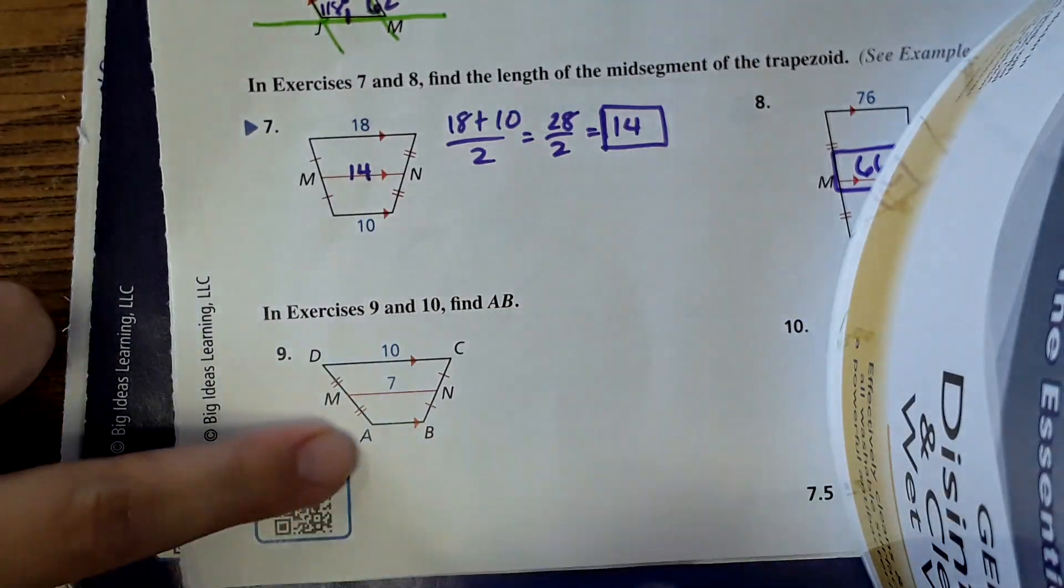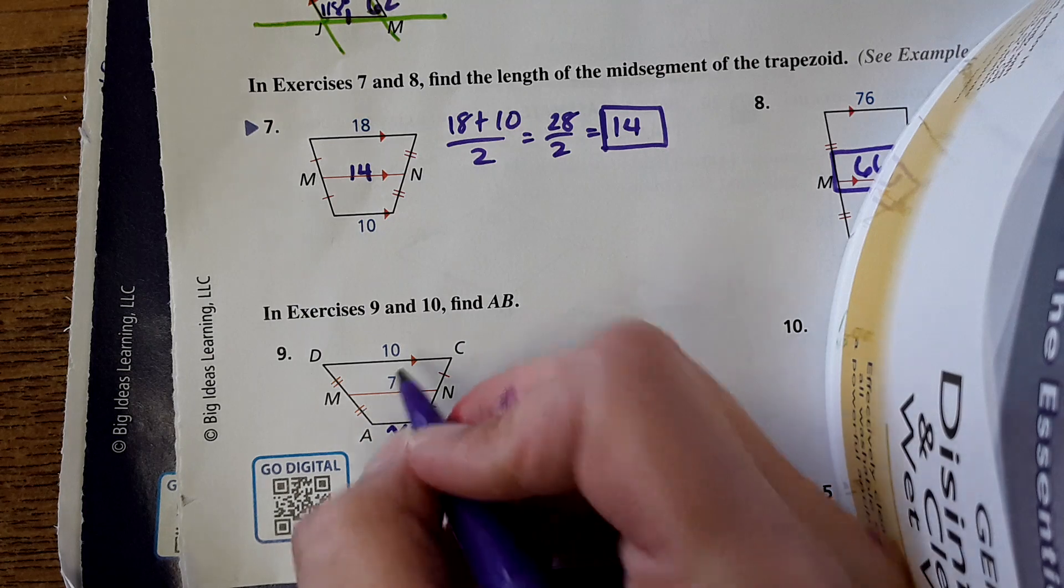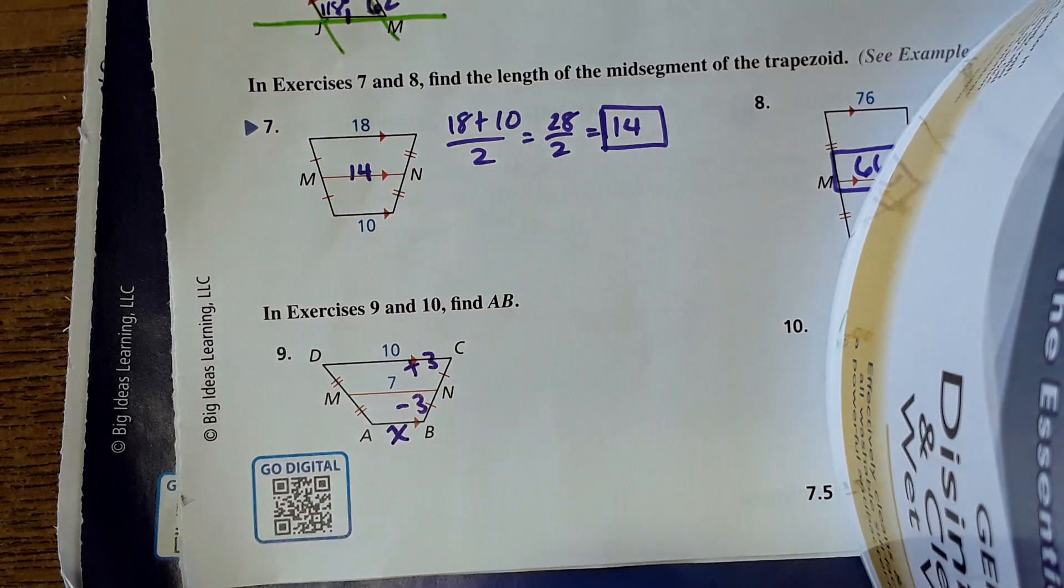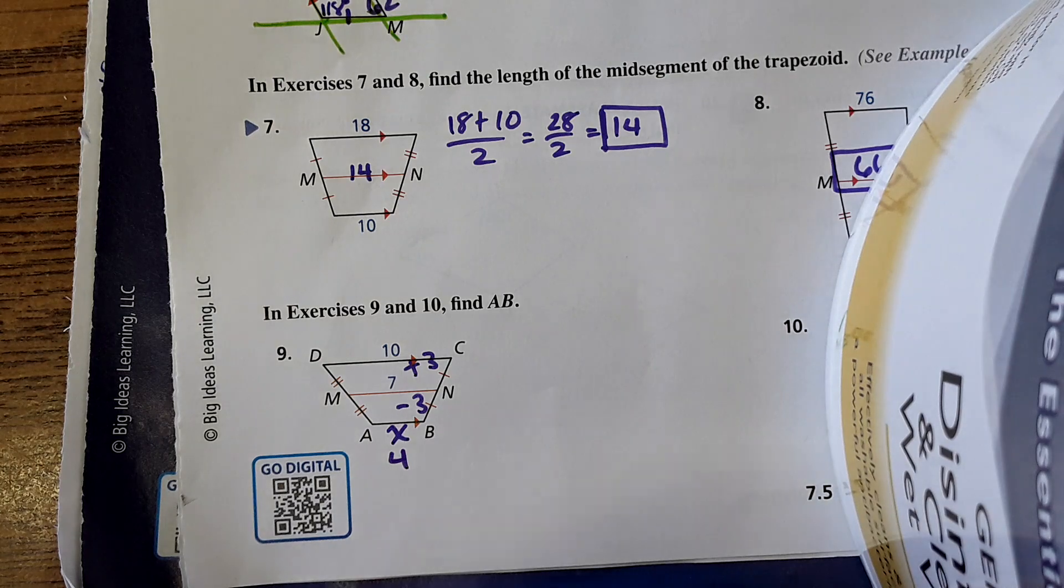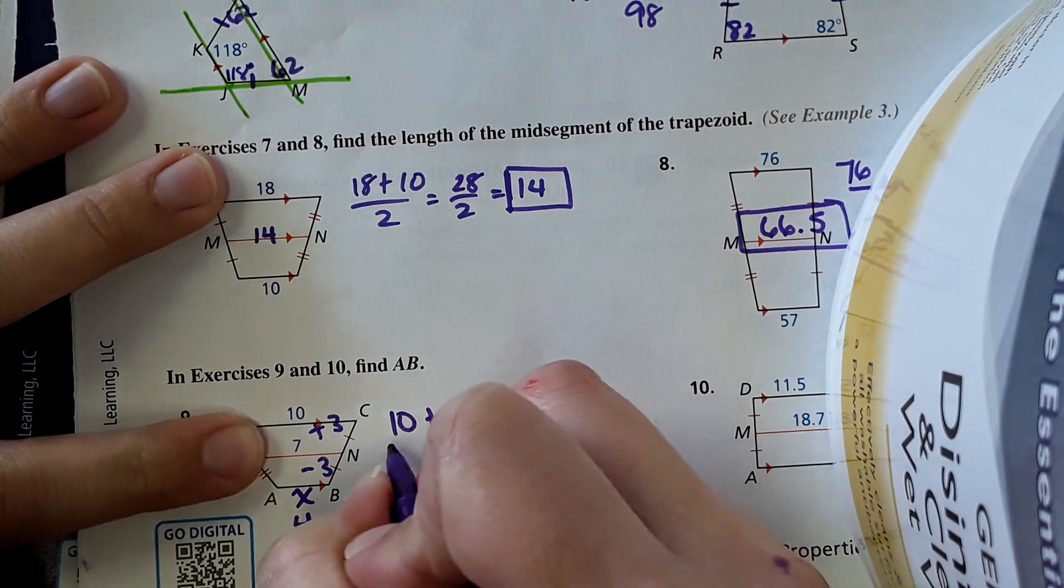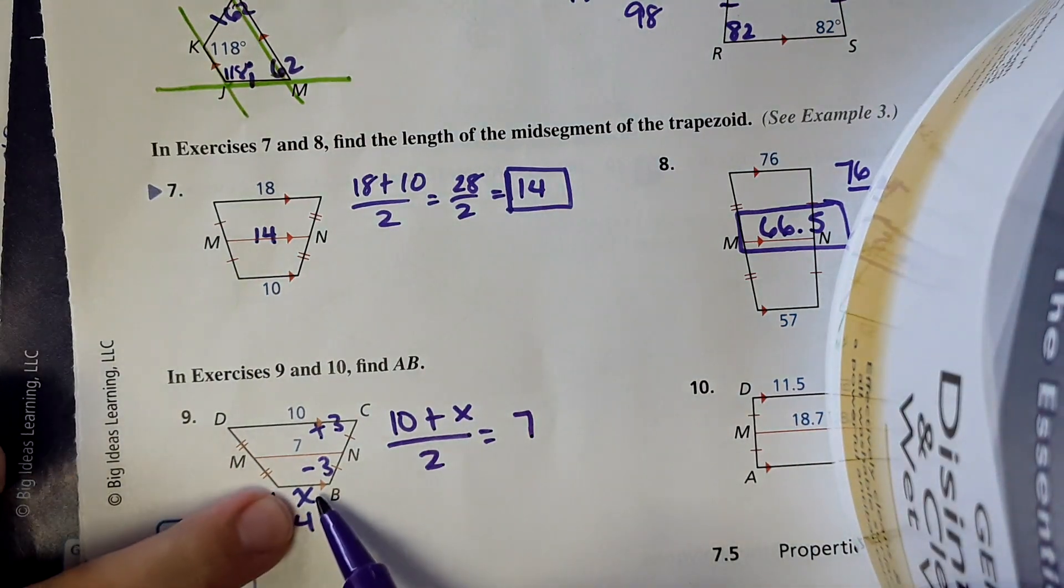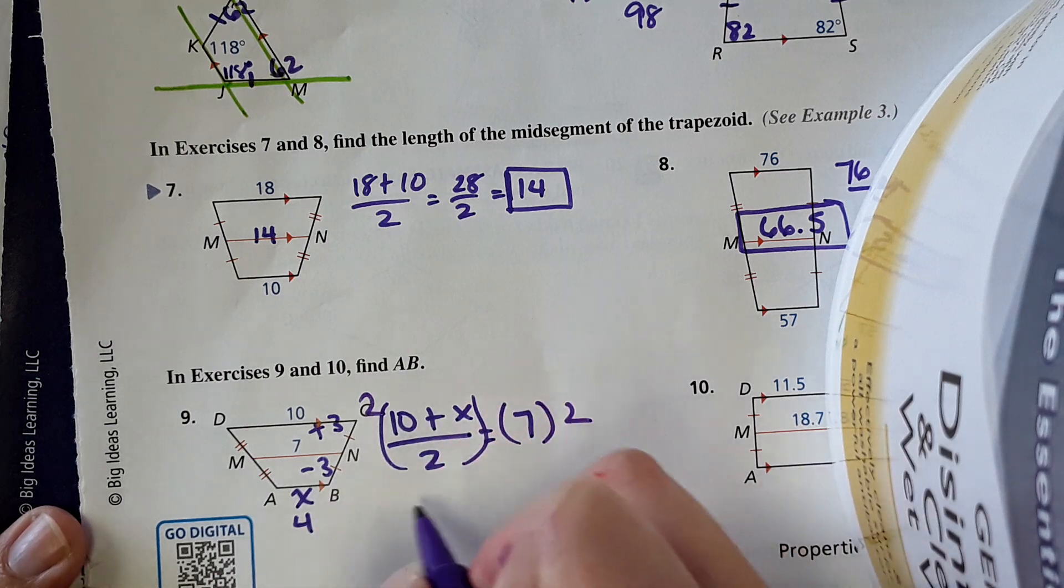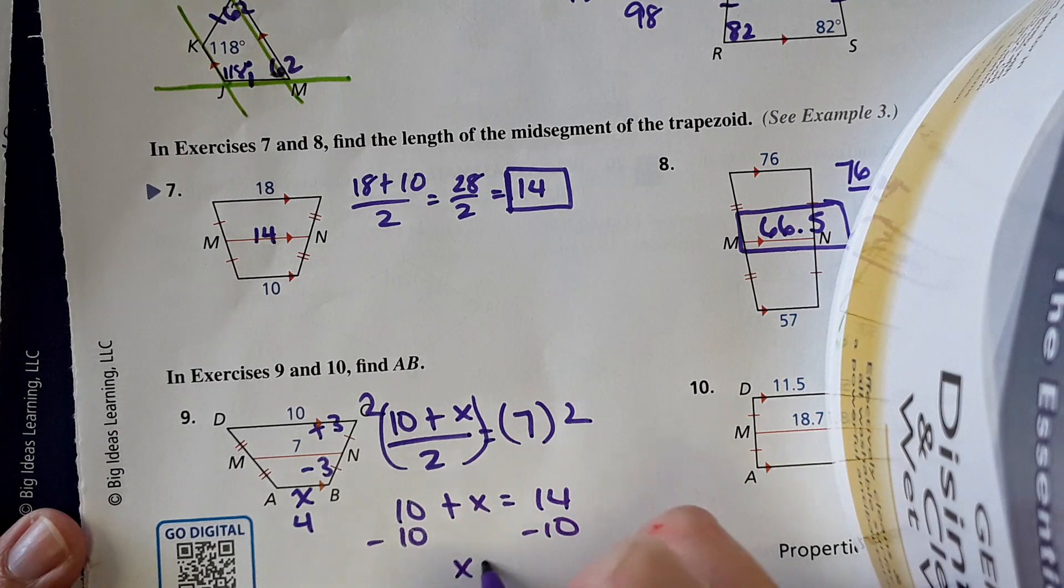Okay, find AB. So now it wants this right here. You could use the equation, or you could recognize that this is 7 plus 3 here, so this number is going to be 7 minus 3 in the other direction, so it's going to be 4. If you don't like that way, then what you could do is 10 plus x divided by 2 will equal 7, and then you can work backwards to solve for this number. So to solve this you could just multiply both sides by 2, and x equals 4.